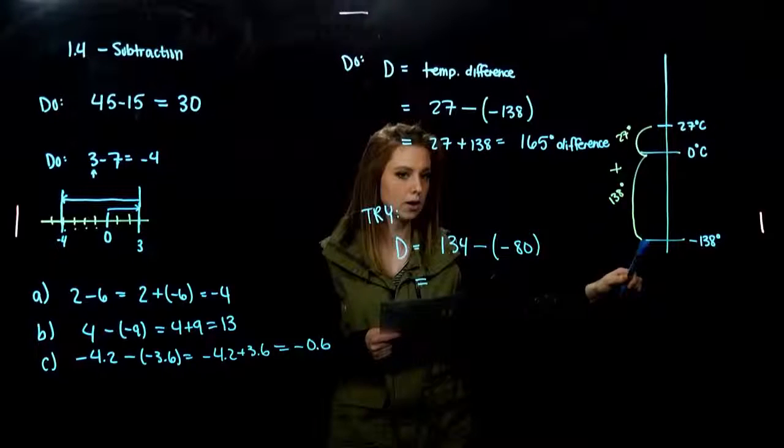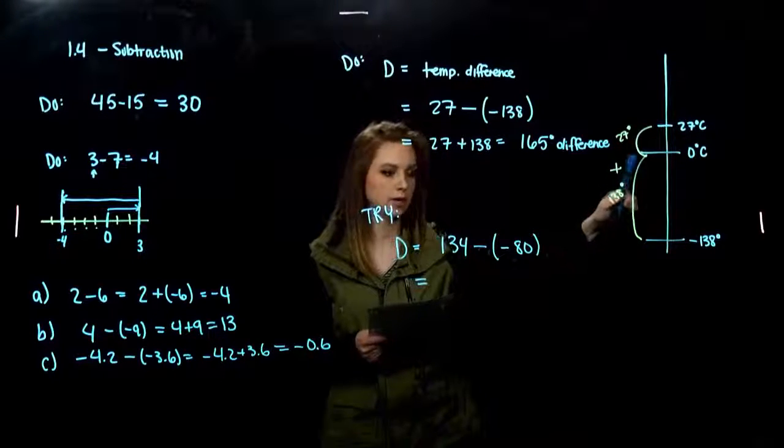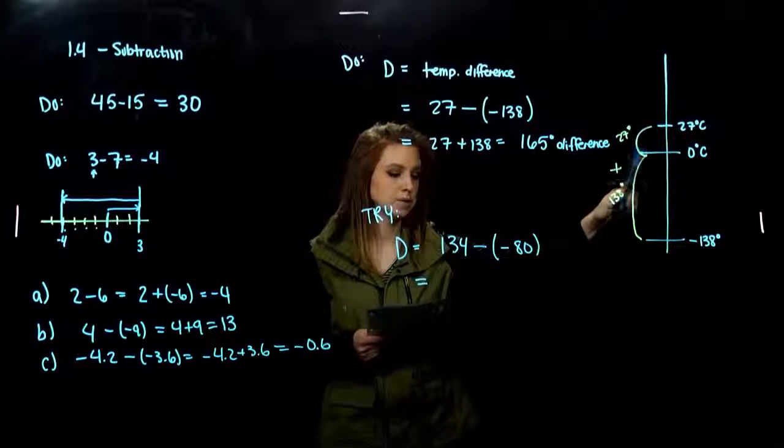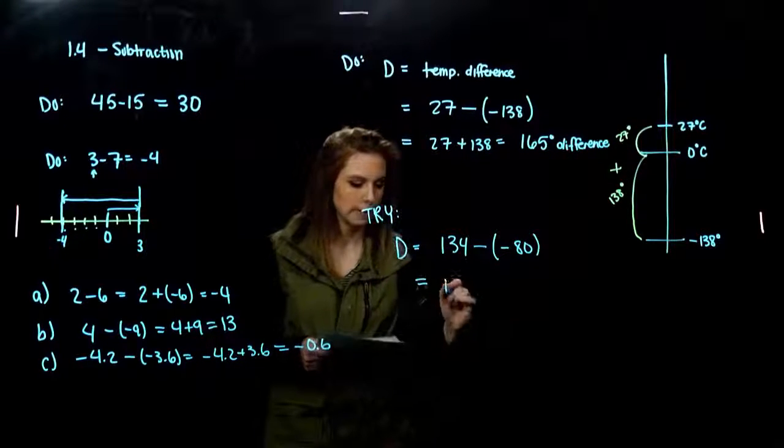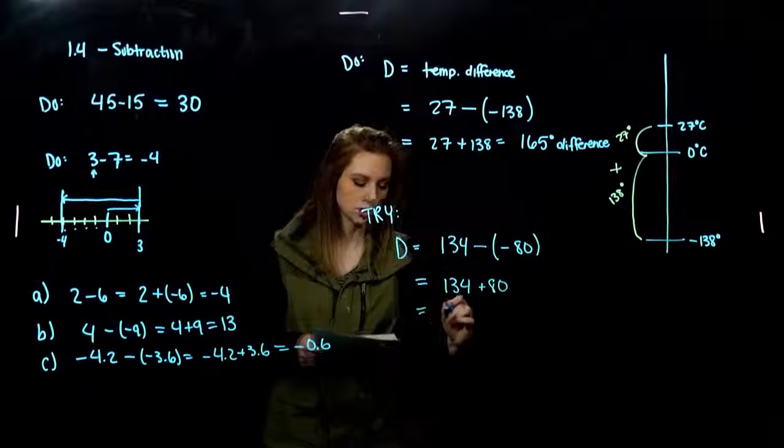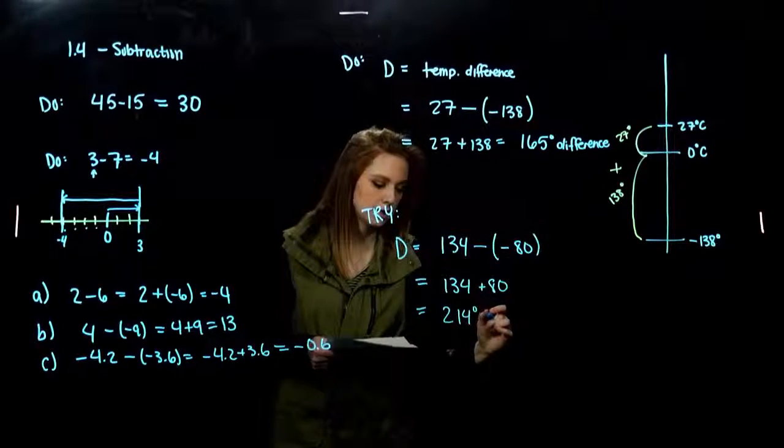Again, drawing the picture. If I'm negative 80 below, I have to travel 80 degrees to get zero. Then, from zero to 134, we had to increase some more. So, we're looking at 134 plus 80, which is a 214 degree difference.